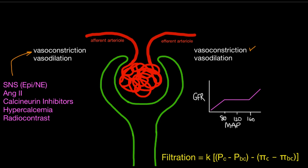All of these things, if causing unjustified vasoconstriction, will lower PC — the pressure in the glomerular capillaries — and impede the kidney's ability to auto-regulate. It's almost like we still have a steep curve, but even at normal blood pressures and normal mean arterial pressures, we've now lost the ability to auto-regulate as well as before. GFR becomes even more dependent on blood pressure due to unopposed vasoconstriction in the afferent arteriole.